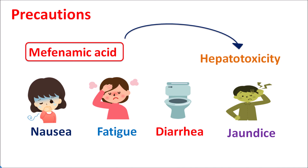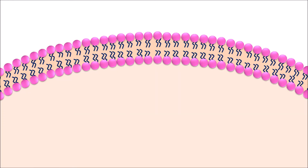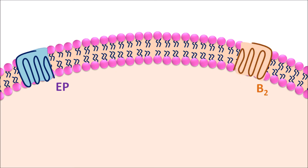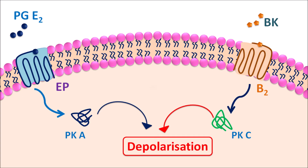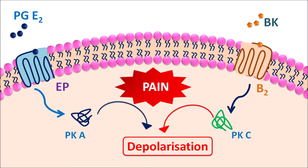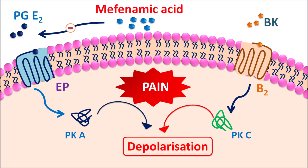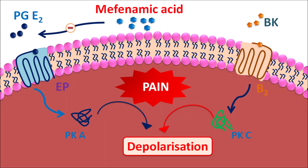Now let us see how this drug acts on nociceptive neurons. Different types of receptors are present — EP receptors and B2 receptors. EP receptors are activated by PGE2, resulting in activation of protein kinase A. B2 receptors are activated by bradykinin, resulting in activation of protein kinase C. Both of these phosphorylating enzymes may result in depolarization and induction of pain sensation. Prostaglandins also sensitize bradykinin receptors, further increasing pain sensation. Mefenamic acid inhibits the synthesis of prostaglandins, thereby inhibiting pain transmission and pain sensation.